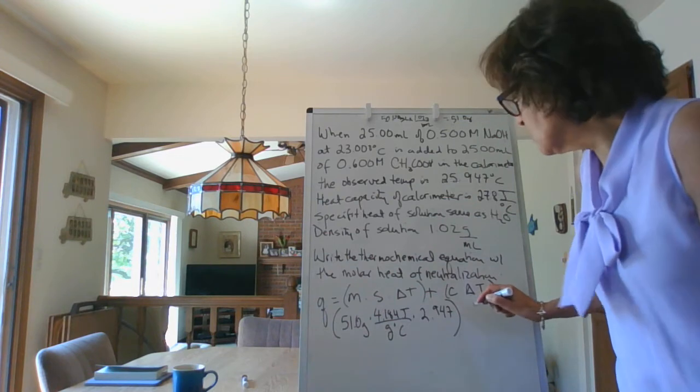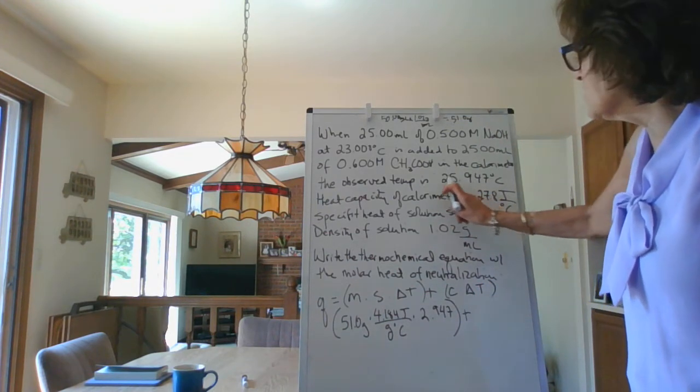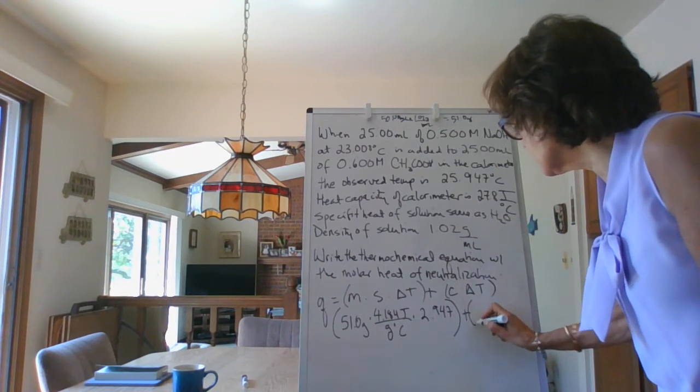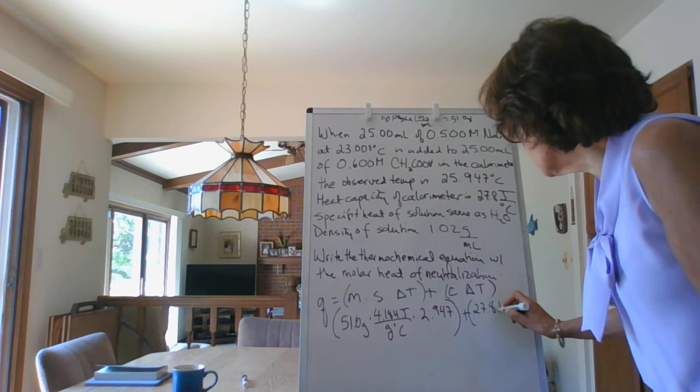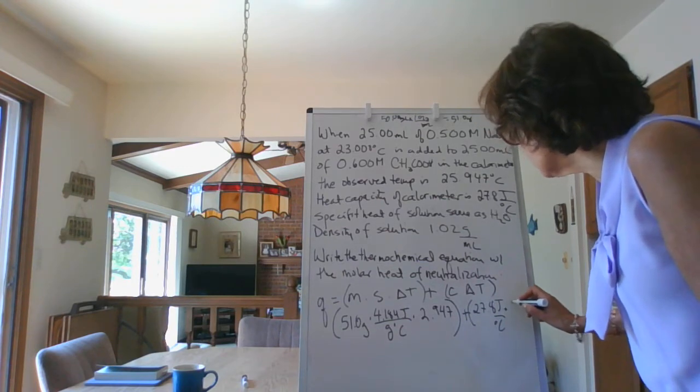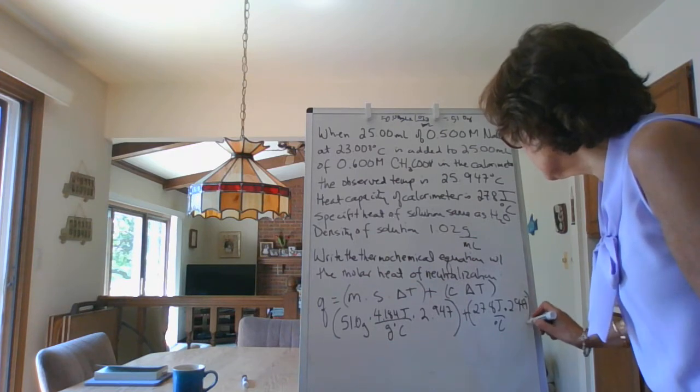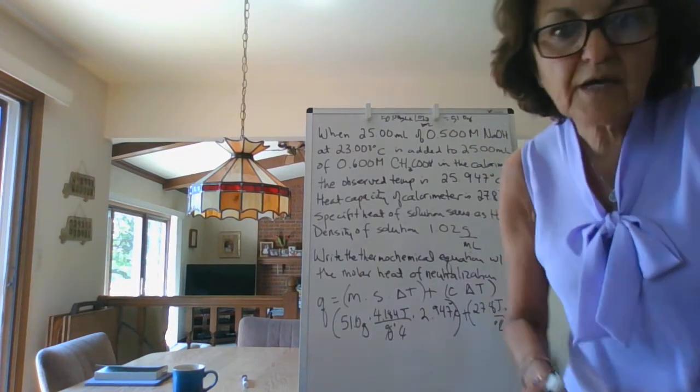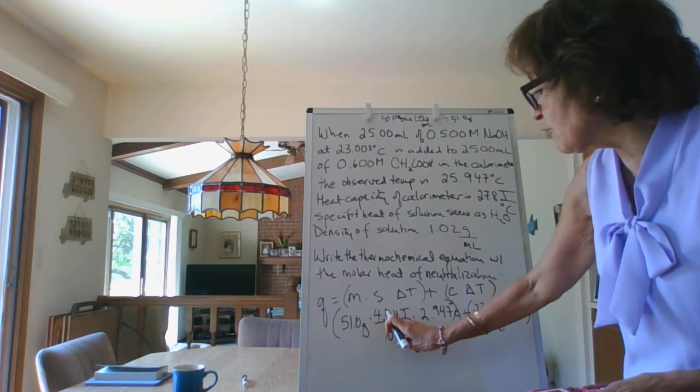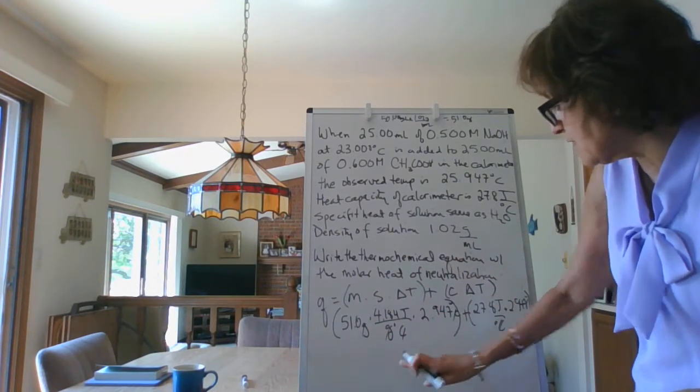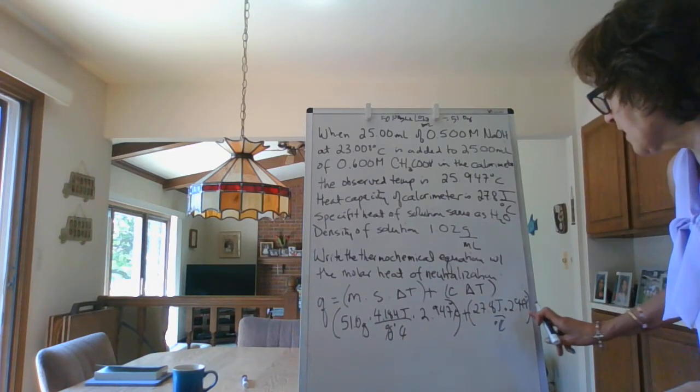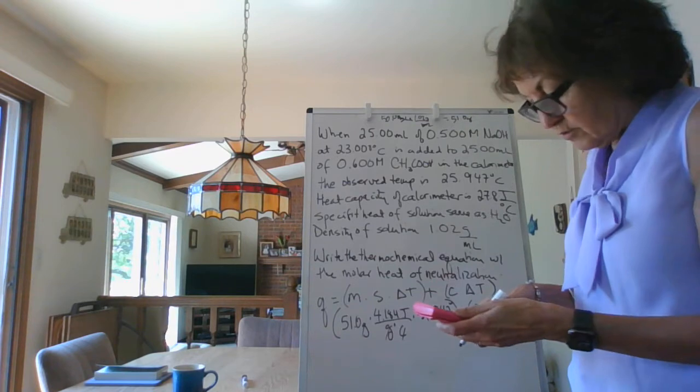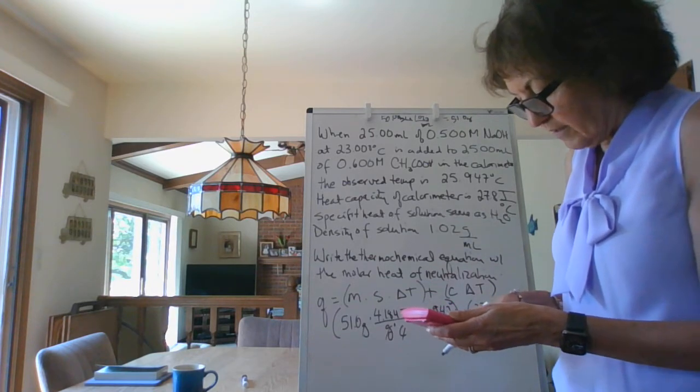That's your delta T, and it's the same delta T for the calorimeter also. So we're going to go plus, the C value is right over here, 27.8 is the heat capacity of the calorimeter. So 27.8 joules per degree Celsius times 2.947 degrees. Everything cancels except for the joules. Pick up your calculator: 51 times 4.184 times 2.947, press equals, get a number. Then 27.8 times 2.947, press equals, and then add these two together.